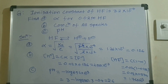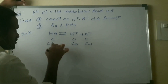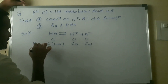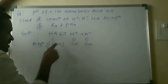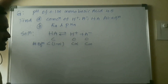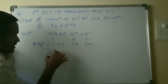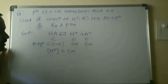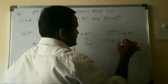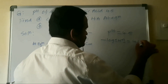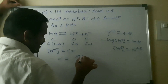At equilibrium, H⁺ ion concentration = Cα, A⁻ ion concentration = Cα, and undissociated HA concentration = C(1 − α). If pH = 4.5, then H⁺ ion concentration = 10⁻⁴·⁵.